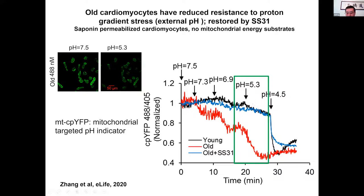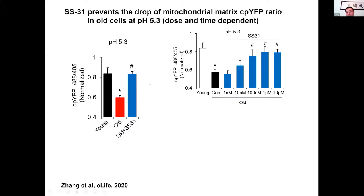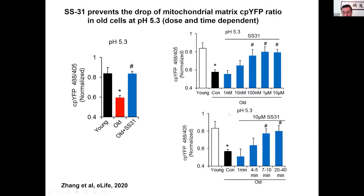Because the fluorescence changes most dramatically at pH 5.3, we focused on this pH for the rest of the research. SS31 treatment can restore fluorescence to the young level at pH 5.3. We tested the dose effect of SS31 and found it is effective at very low doses, down to 100 nanomolar. SS31 takes effect within 7 to 10 minutes. We also observed the phenomenon of mitochondrial flash — a transient increase of the mitochondrial cpYFP signal in a single mitochondrion — and saw three mitochondrial flashes in a single mitochondrion.